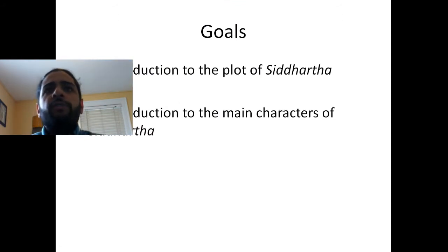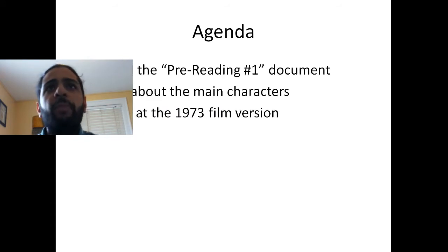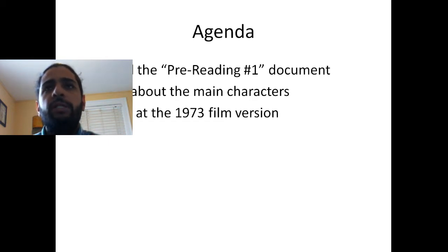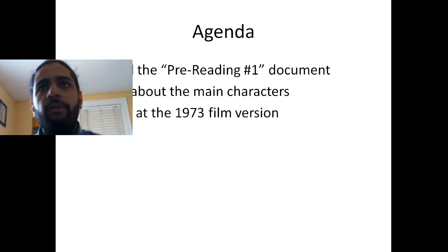Here are our goals for this video. First of all, we want to introduce you to the plot of this novel and the main characters. Our agenda will be to look at the pre-reading number one document, which my students can find at hlc.joza.org. We are going to discuss some of the main characters, and at the end of this video, we're going to take a look at the 1973 film version of the novel.